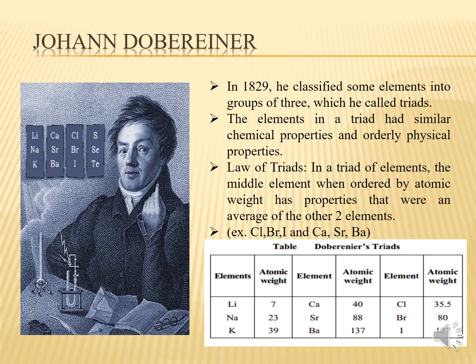Now let us move to another scientist who contributed to the periodic table — that is John Döbereiner. Döbereiner was a German chemist who made significant contributions to the development of the periodic table. He discovered the law of triads: for example, if you take the average of the atomic weights of calcium and barium, it comes out around the atomic weight of strontium. In this way, he made certain arrangements of elements in triads — the first attempt to arrange elements in the form of columns or any kind of group.